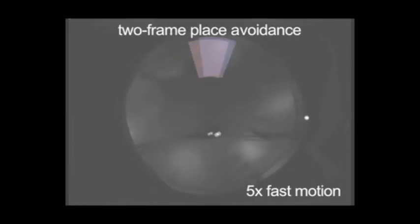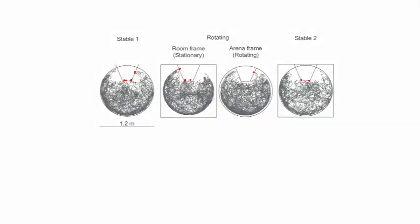But for the rat, the locations were identified by stationary room cues and rotating arena cues. We first made sure that rats could solve this task and were expert at it.